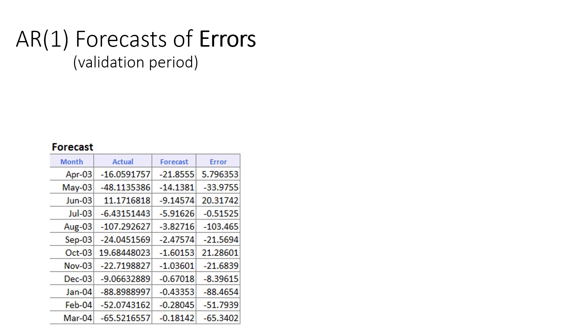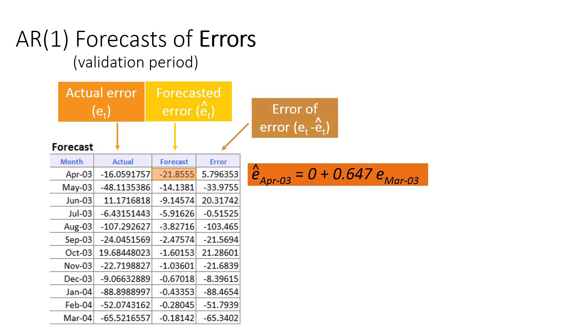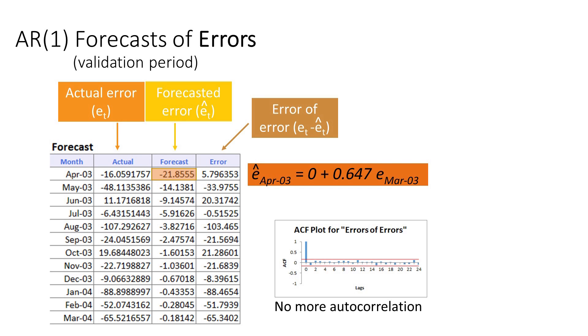Here's the result of using our estimated AR(1) model to generate forecasts for the errors in the validation period. The actual column is the actual values of the forecast errors resulting from the step one regression. The forecast column is the forecasted errors using the AR(1) model. And the error column is the difference between the first two columns, or what we call the errors of errors. For example, the forecasted error for April 2003 is computed using the AR(1) coefficients 0 and 0.647, and the actual error in March 2003. Let's see if this step two modeling captures all the autocorrelation. We can do this by plotting the ACF chart of the errors of errors. We see that nothing remains. We've captured all the autocorrelation.